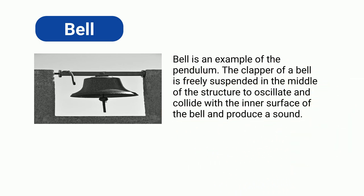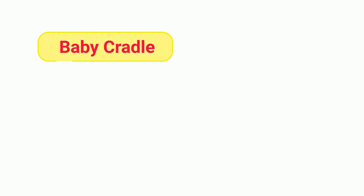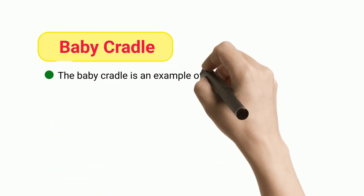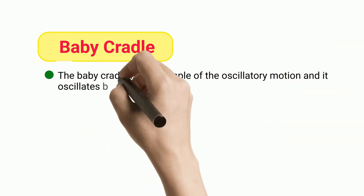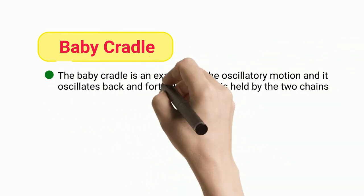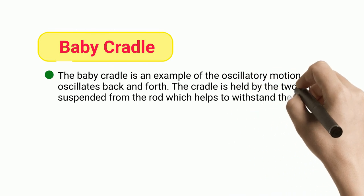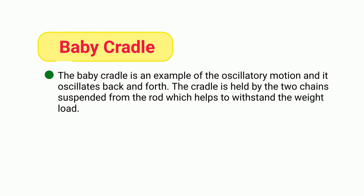Baby Cradle: The baby cradle is an example of oscillatory motion and it oscillates back and forth. The cradle is held by two chains suspended from the rod which helps to withstand the weight load.